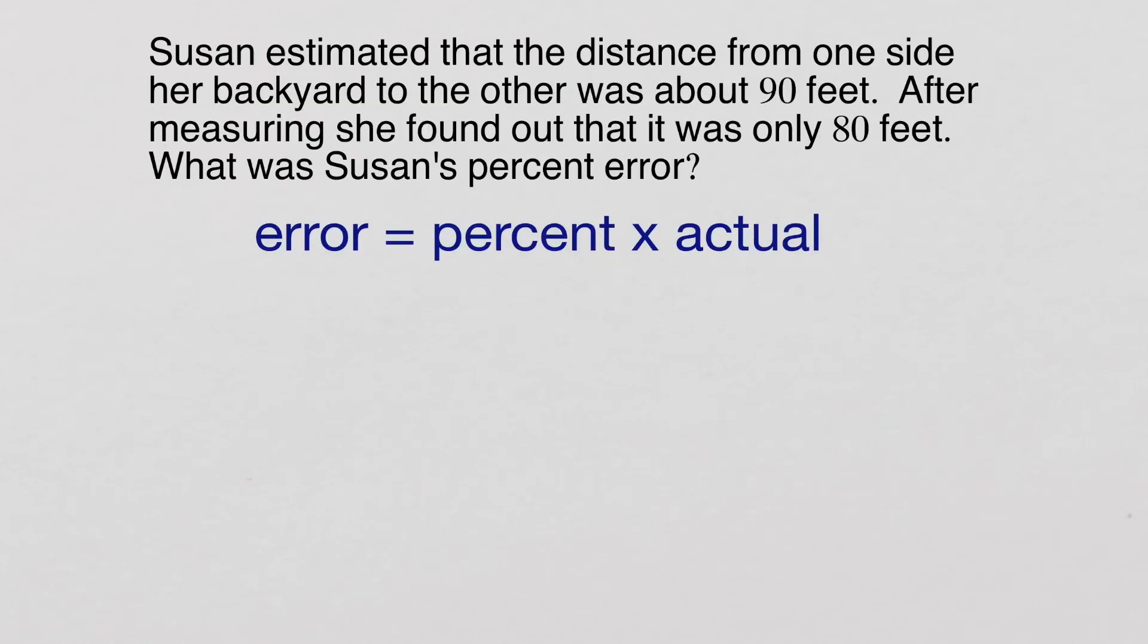So we have Susan here. Susan estimated that the distance from one side of her backyard to the other was about 90 feet. After measuring, she found out that it was only 80 feet. What was Susan's percent error?